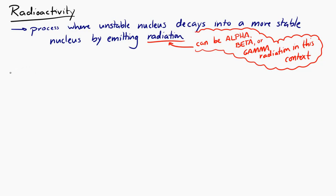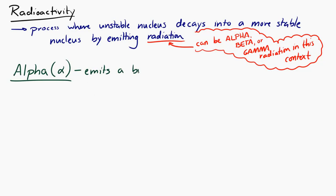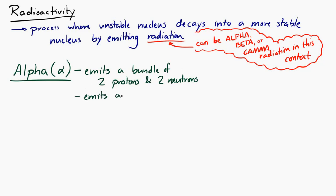Alpha radiation is when the unstable nucleus emits a bundle containing two protons and two neutrons — in other words, it emits a helium nucleus. You might wonder why it's emitting a helium nucleus and what's so special about helium.